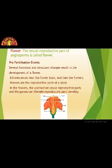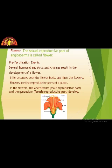These are the two main parts which help in reproduction. Androecium consists of whorls of stamens, and gynoecium contains the female reproductive part, that is the pistil. Before we proceed, we would like to have a brief look at the parts of the flower. Before that, we will see pre-fertilization events. Fertilization is the fusion of gametes, and before this, pre-fertilization events take place. Several hormonal and structural changes result in the development of a flower.